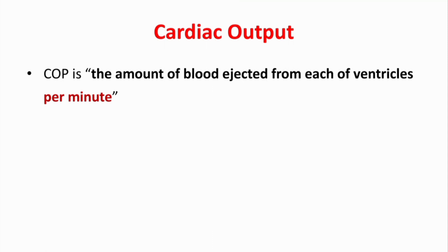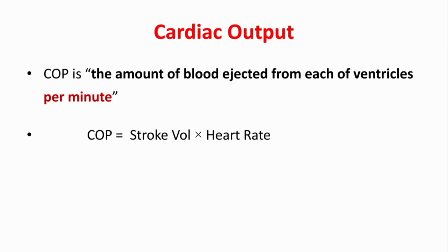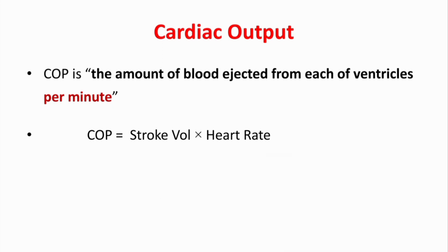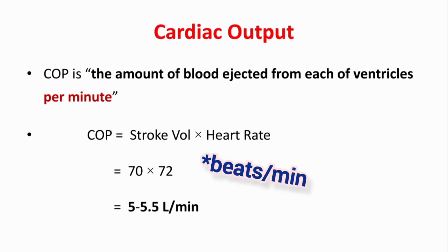By definition, cardiac output is the amount of blood ejected from each ventricle per minute. Its formula is cardiac output equals stroke volume multiplied by heart rate. Stroke volume is the amount of blood ejected from each ventricle in one heartbeat or one systole, and normally it is 70 ml. So if the heart rate is 72, then 70 multiplied by 72 gives us the normal cardiac output, which is 5 to 5.5 liters per minute.